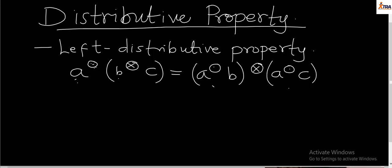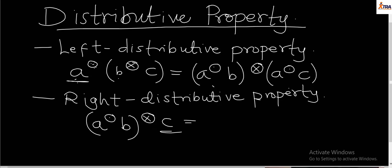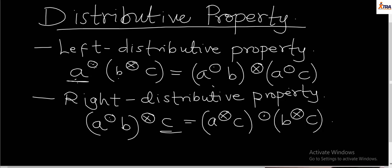For the right distributive property, it also follows the same principle. The only difference is that the single variable is at the right-hand side. Instead of the single variable being on the left side, it is on the other side. It is still the same process of expansion. More often than not, we consider the left distributivity property as the standard for distributivity.